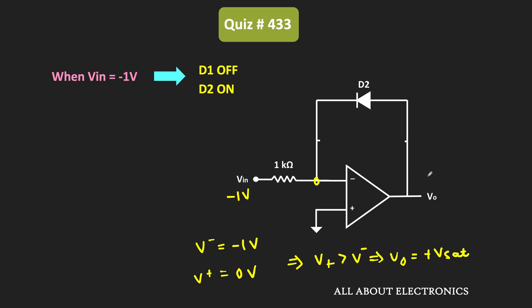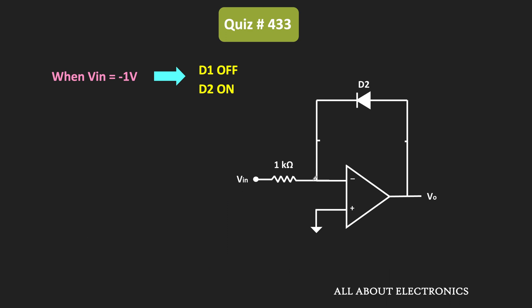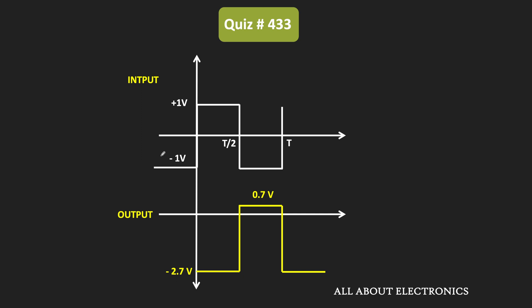With D2 in the feedback path, because of the negative feedback we can again apply the concept of virtual ground, meaning the inverting terminal of the op-amp is at ground potential. Applying KVL in this loop, the output voltage equals the forward voltage drop across diode D2, which is 0.7V. So whenever VIN equals −1V, the output voltage is equal to 0.7V.